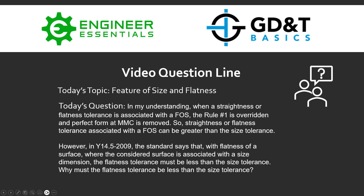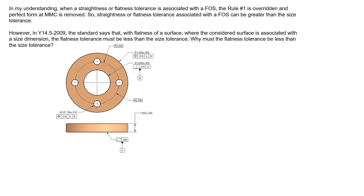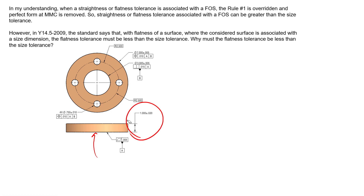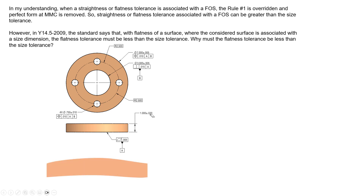In order to answer this, let's dig into a couple drawings and compare them side by side and take a look at what the standard tells us. Here we have flatness applied to a flat planar surface. We see that flatness is applied to this bottom surface, and it's also qualifying datum feature A, so we're making sure this bottom surface can be held between two parallel planes spaced apart five thousandths. This surface is also utilized in the size dimension, which creates a feature of size.